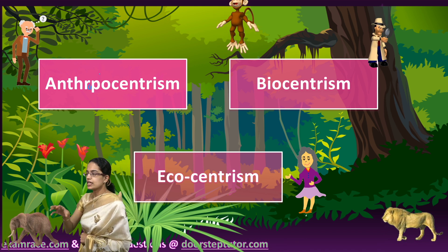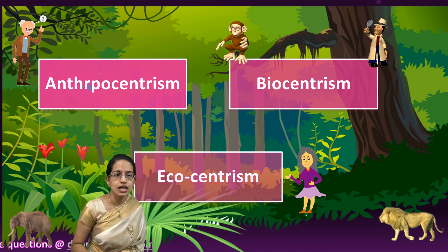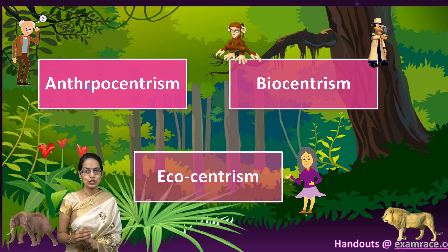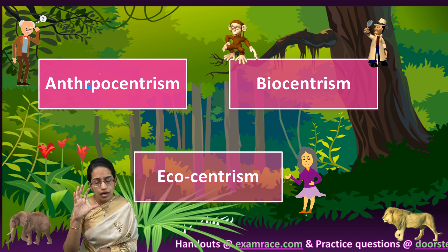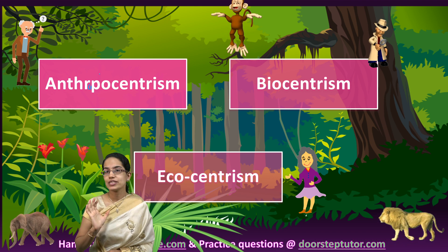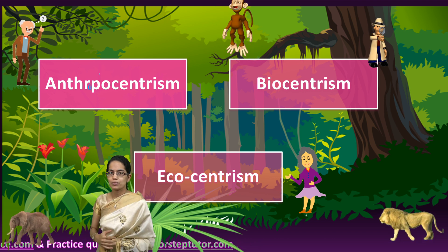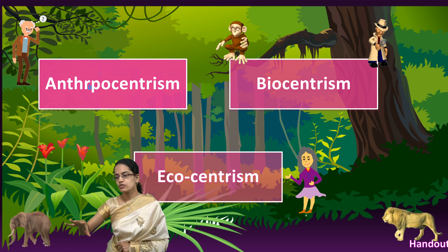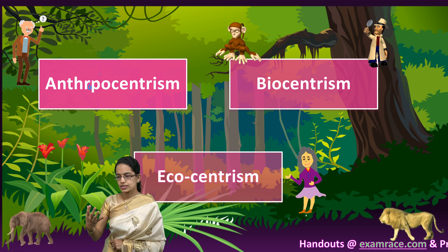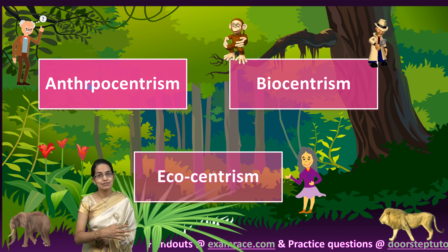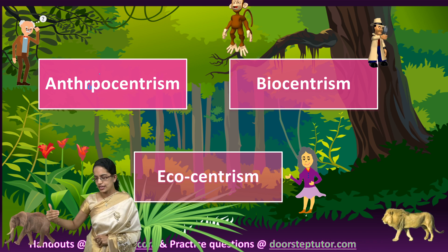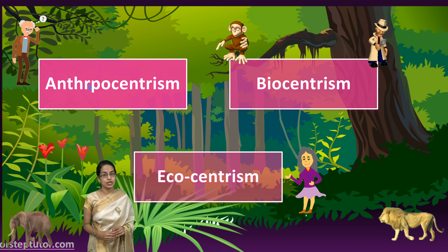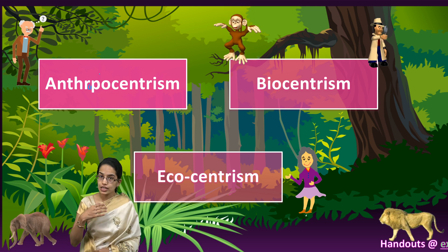The biocentric approach says that each organism around us has its right to coexist, and none of those rights should be suppressed. The third approach, ecocentrism, maintains that the environment deserves moral consideration. This moral consideration focuses on understanding organisms and their lives alongside our own, maintaining a proper balance between the two life structures.